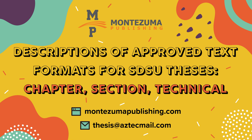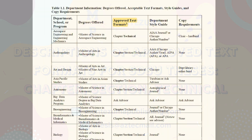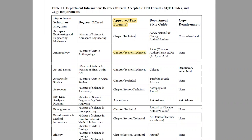This video describes the different required text formats for San Diego State University theses. Text format refers to how your thesis or dissertation is organized. There are three possible structural formats to follow for the text: chapter, section, or technical. The format used will depend on the formats approved by your program.